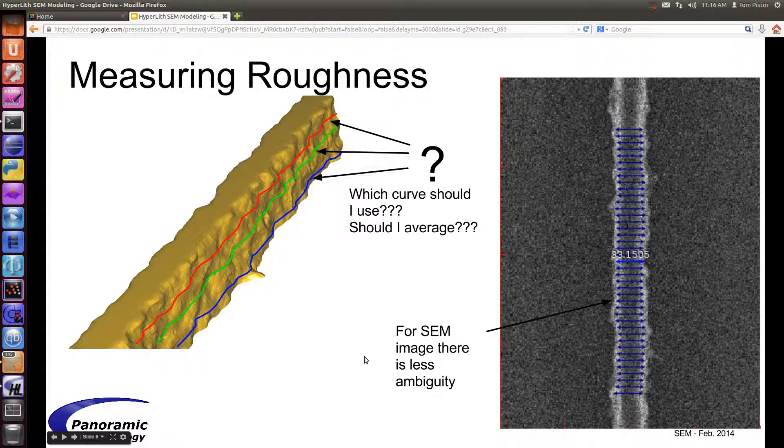When you measure roughness, there's always an issue about where to measure the resist profile. Should I measure at the top, at the bottom? Should I average this out? But when you measure roughness on a SEM image, it's a little bit more clear.